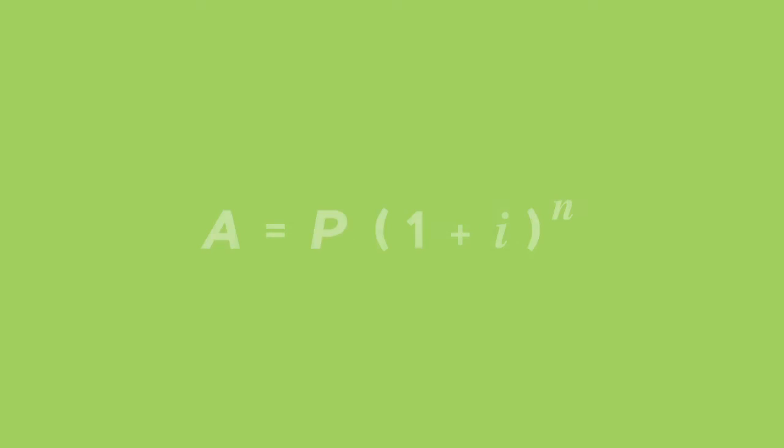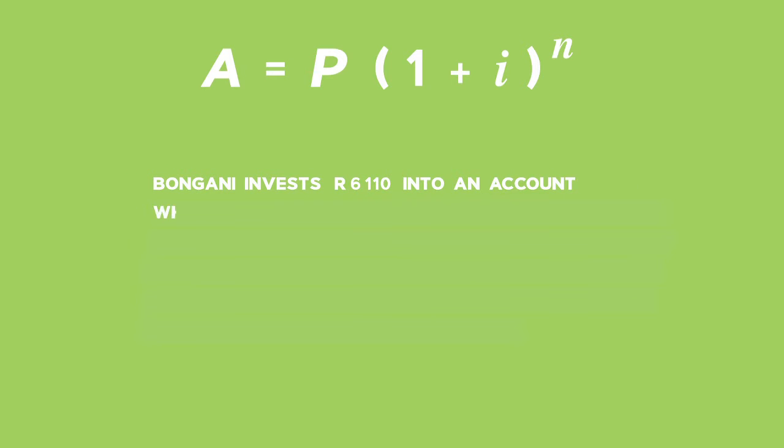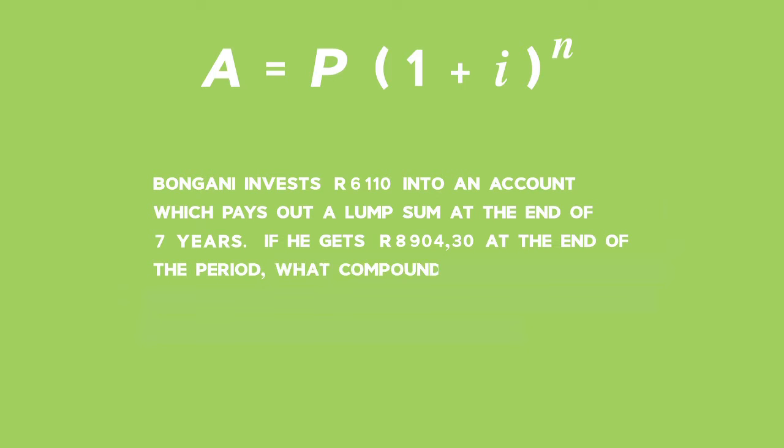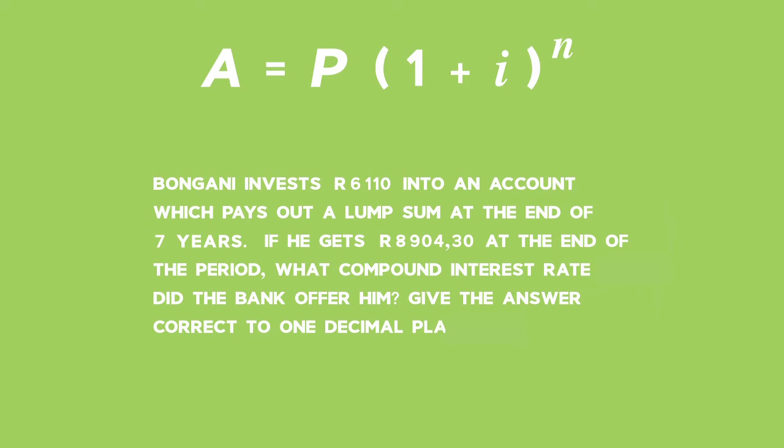Let's have a look at a question using the compound interest formula where we've got to work out one of the other variables. This question reads: Bongani invests 6,110 rand into an account which pays out a lump sum at the end of seven years. If he gets 8,904 rand and 30 cents at the end of the period, what compound interest rate did the bank offer him? Give the answer correct to one decimal place.